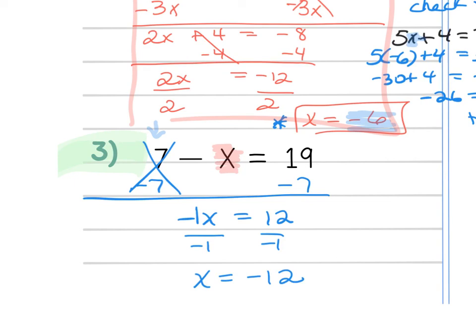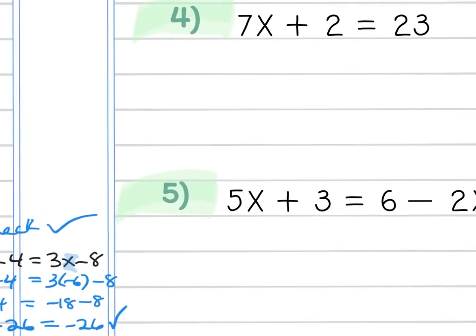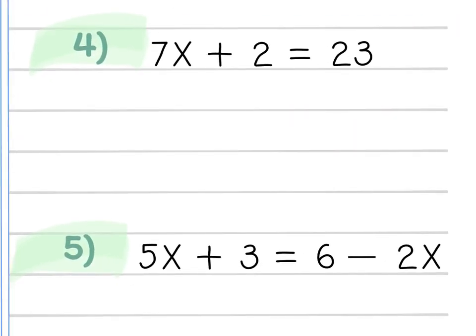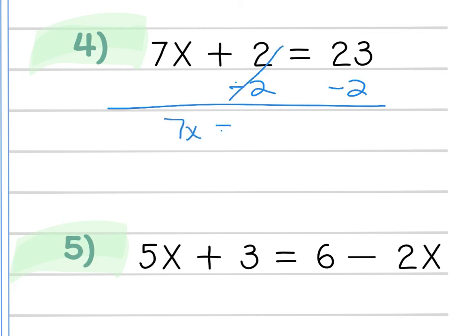Let's try the next one — another two-step equation. I'll subtract 2 first from both sides, leaving 7x = 21. Divide by 7, and x = 3.